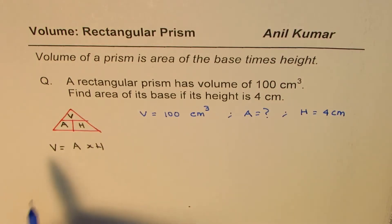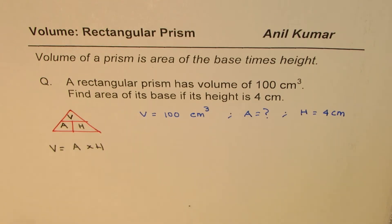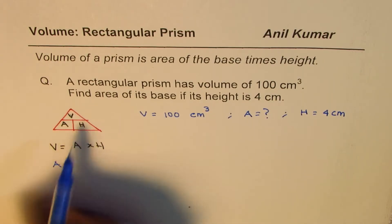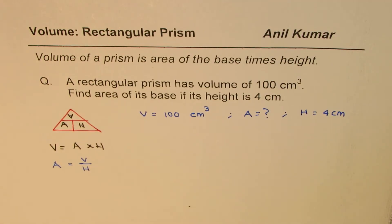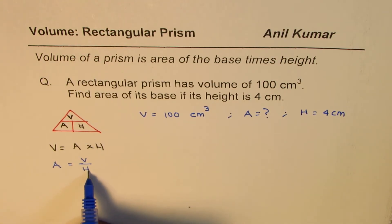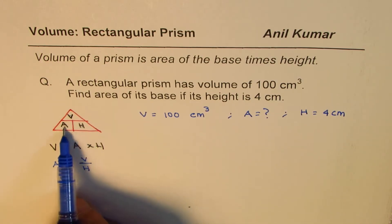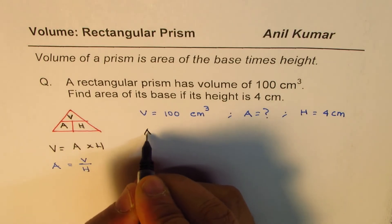The volume formula is: volume is area times height. From this triangle, you can see that area is volume divided by height. That is how you use this triangle to easily rearrange and find a new formula. So area is volume divided by height. Similarly, height could be volume divided by area.